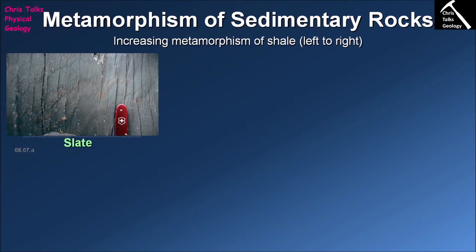Certain minerals will be perfectly happy at lower temperatures and pressures, so these would obviously be present in lower-grade metamorphic rocks. In contrast, those minerals will steadily become unstable as temperature and pressure gets higher, so by the time we reach high-grade metamorphic rocks there will be a completely new set of minerals present.